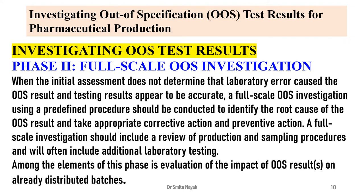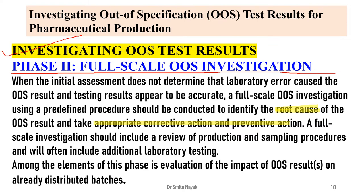Once it has been proven that there is no laboratory error, the next step is to carry out a full-scale OOS investigation — Phase 2. When an initial investigation does not determine that laboratory error caused the OOS result and the results obtained are accurate, a full-scale OOS investigation using a predetermined procedure should be conducted to identify the root cause. An appropriate corrective action and preventive action should then be taken. This involves a review of production and sampling procedures and additional laboratory testing.